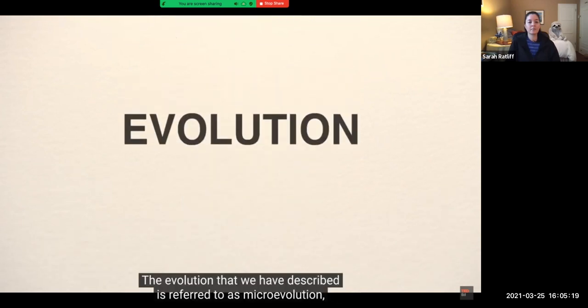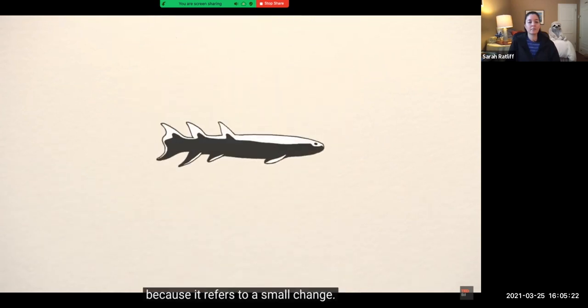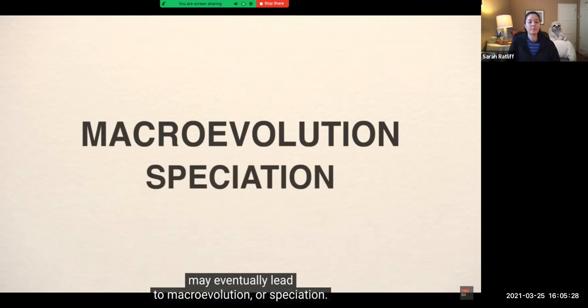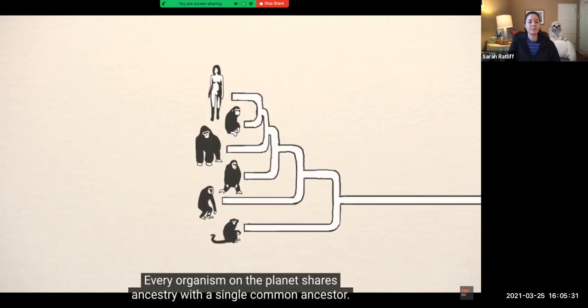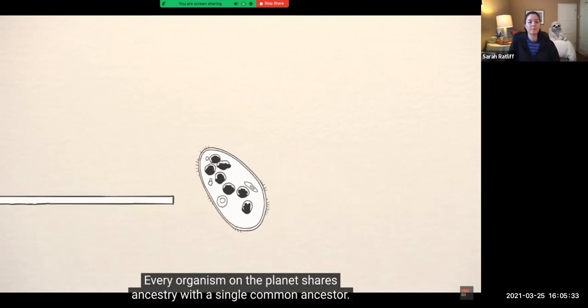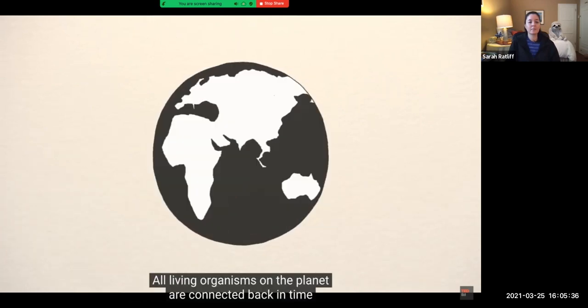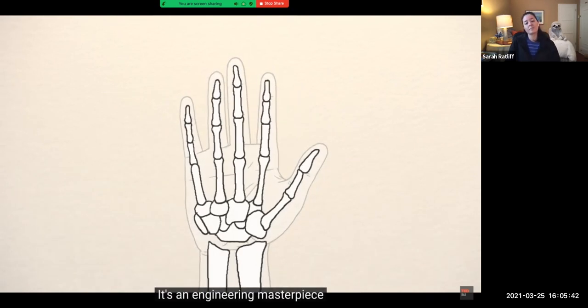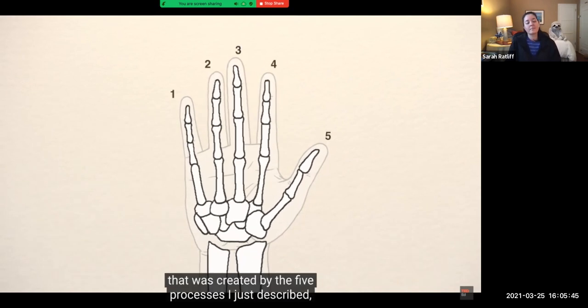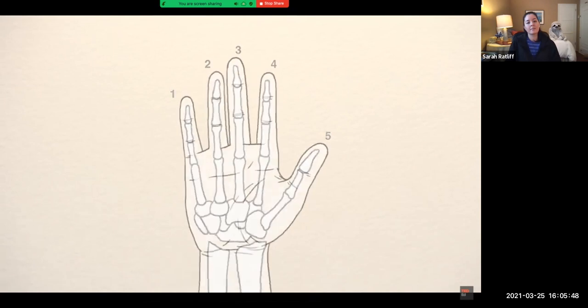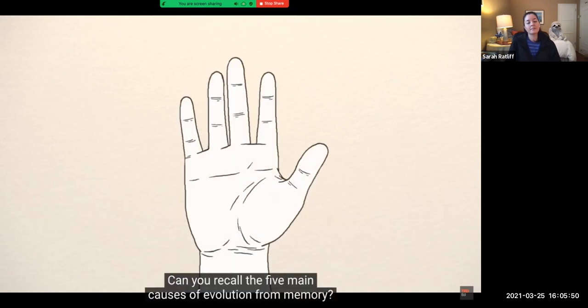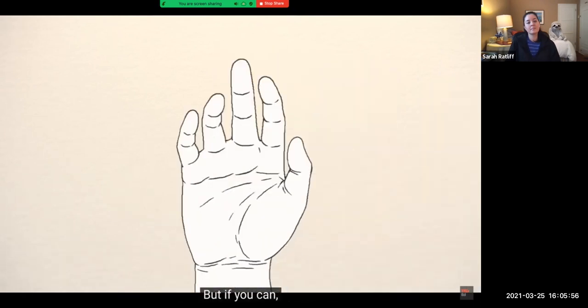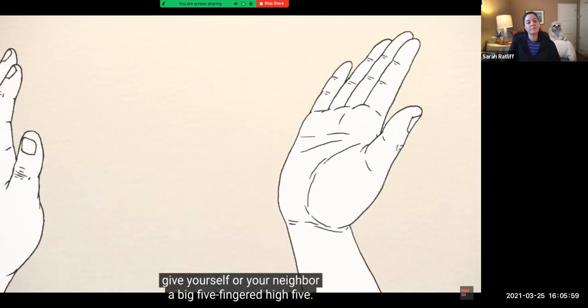The evolution that we have described is referred to as microevolution because it refers to a small change. However, this form of evolution may eventually lead to macroevolution or speciation. Every organism on the planet shares ancestry with a single common ancestor. All living organisms on the planet are connected back in time through the process of evolution. Take a look at your own hand. It's an engineering masterpiece that was created by the five processes I just described over millions and millions of years. Can you recall the five main causes of evolution from memory? If you can't, hit rewind and watch that part again. But if you can, give yourself or your neighbor a big five-fingered high five.